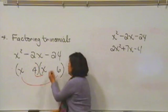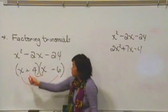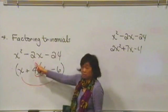How? Well, if we have the 6 negative and the 4 positive, we'll have negative 6x and positive 4x. That's negative 2x.